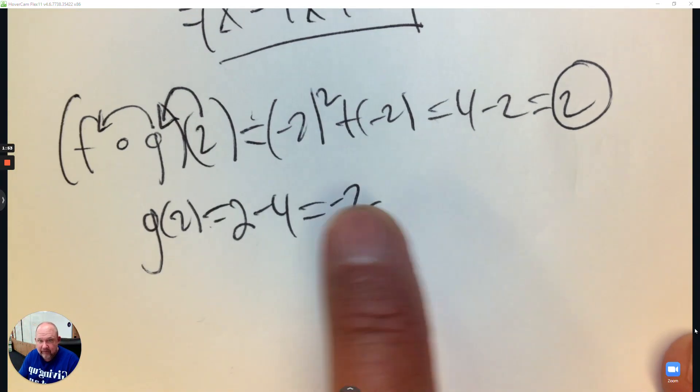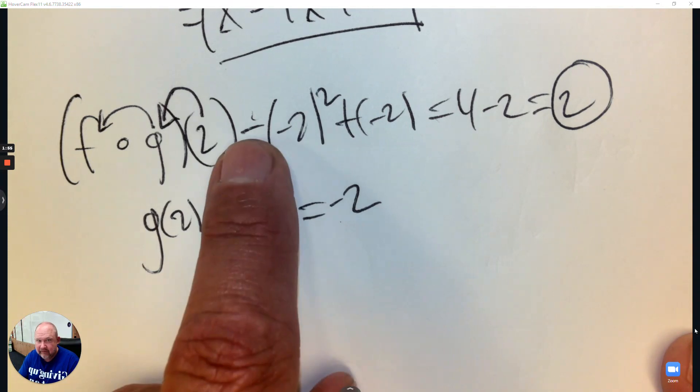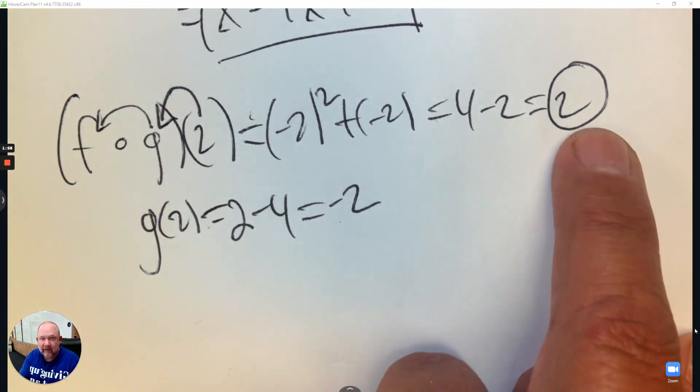So I plugged it into g and got negative 2. Then take that answer, plug it into f. Negative 2 squared is 4. Take away 2. And you get your answer.